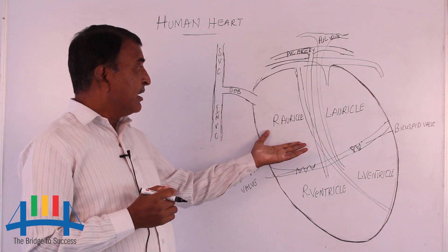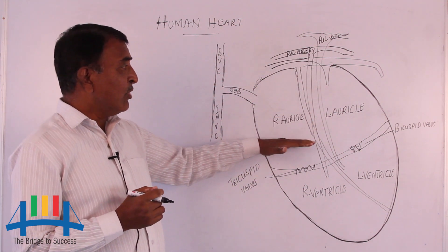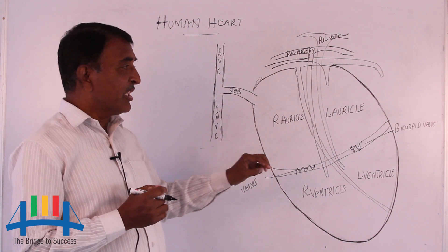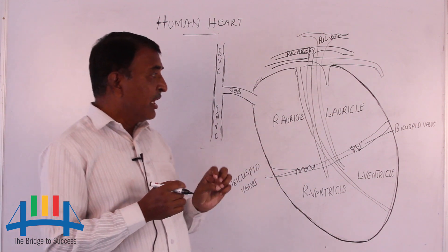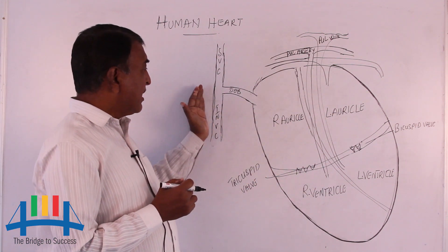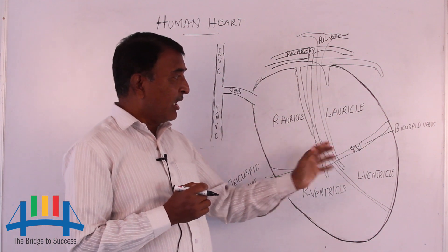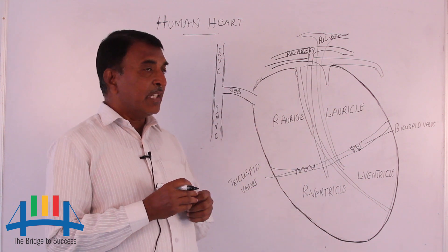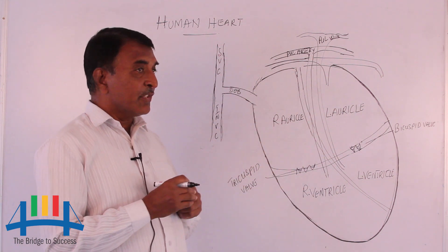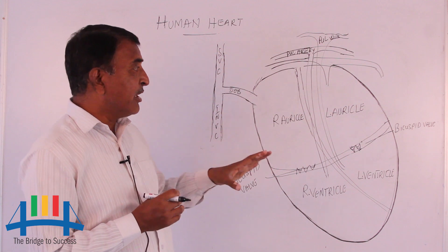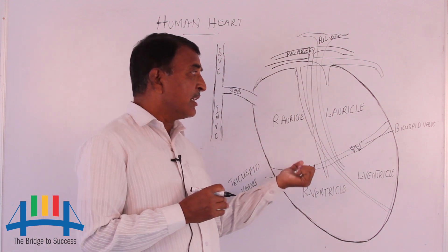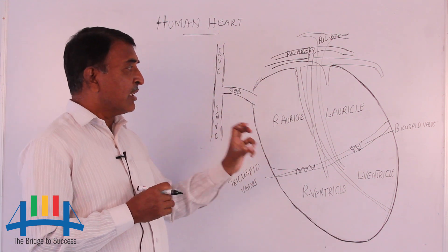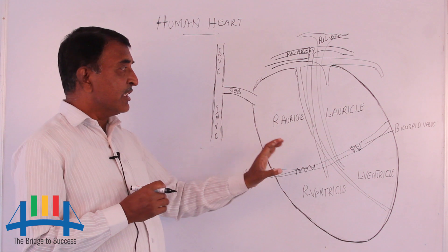The right auricle and the left auricle — these two are very important where the blood is collected. Now, once if you observe the heart from the outside, we can see four groove-like structures. With that, we can see that the heart is internally divided into four chambers. A chamber means a small portion — a small part of the heart.